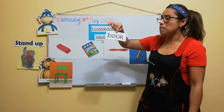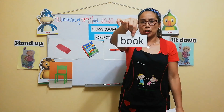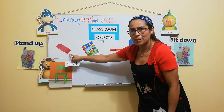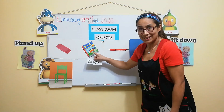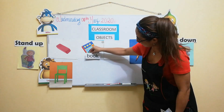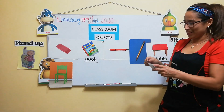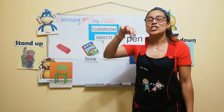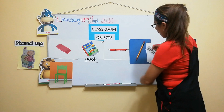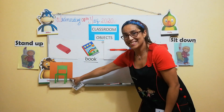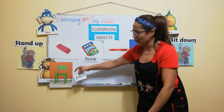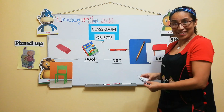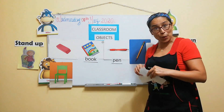The word is book. Book. What is a book? Here. Here. Yes. Book. Okay. Book. This word is pen. Yes. Pen. Where is a pen? Where is a pen. Yes. All right. So, another word.